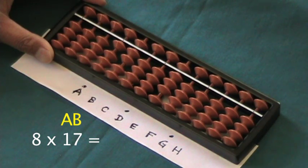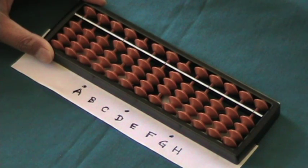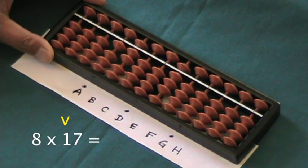Now, to multiply with a two-digit multiplier, we're going to use the first digit of the multiplier first. By that, I mean the number 1.